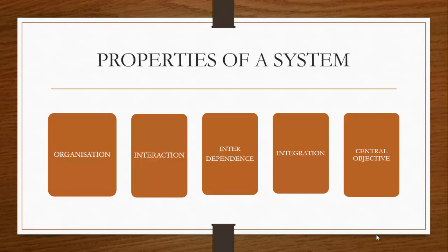The third property of a system is interdependence, which means how the components of a system depend on one another for proper functioning. These components are coordinated and linked together to achieve a desired goal. The output of one particular unit will be the input of another unit, which will further be the output of another unit. By this, the different parts of the system are interdependent on each other towards achieving that particular goal.